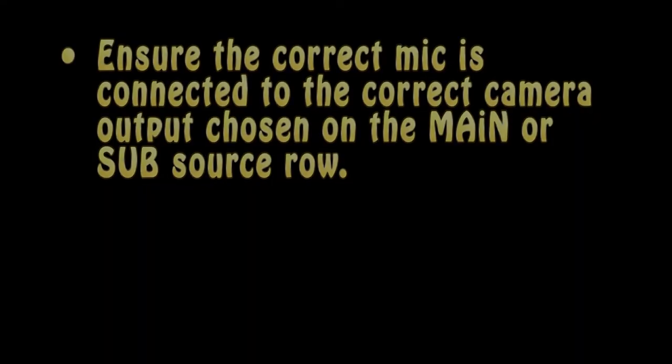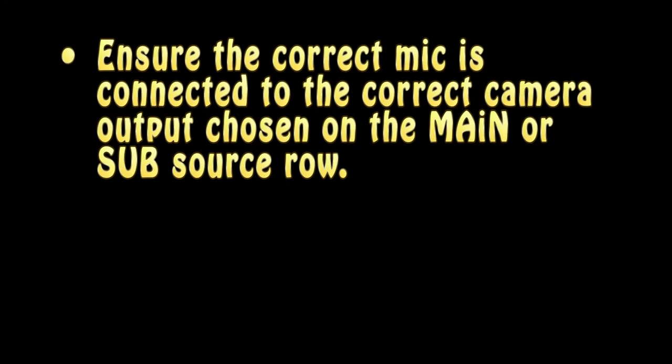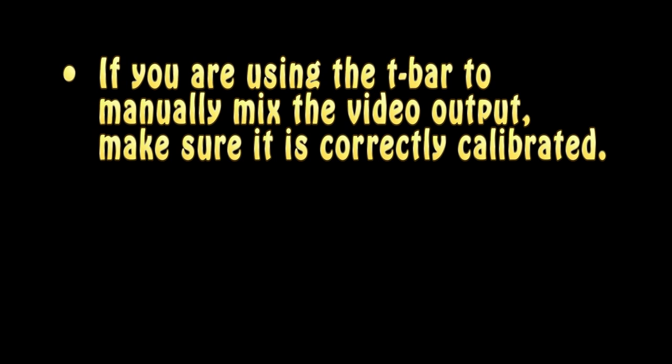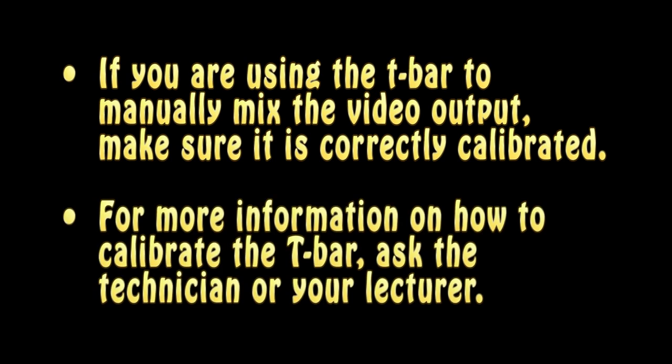Here are a few tips and takeaways. Ensure the correct mic is connected to the correct camera output shown on the main or sub-source row. With the unit powered up and all the cameras and microphones connected, make sure the multi-channel display shows the correct setup on the screen. If you are using the T-bar to manually mix the video output, make sure it is correctly calibrated. For more information on how to calibrate the T-bar, ask the technician or your lecturer. Good luck!